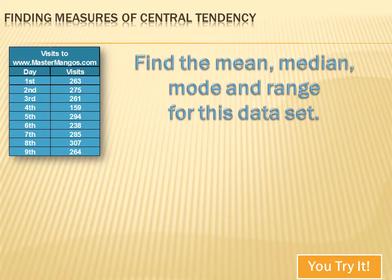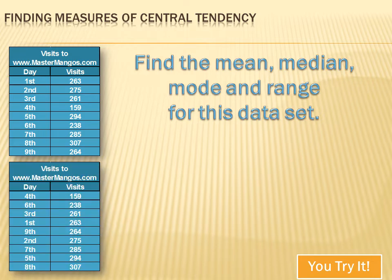We're supposed to find the mean, the median, the mode, and the range for this data set. The first thing to do is put the data set in order from smallest to largest, because that helps us understand it. Looking at the ordered listing, the average, the normal, the middle, is going to be somewhere around the center — that's helpful.